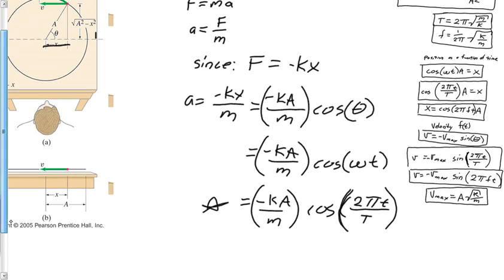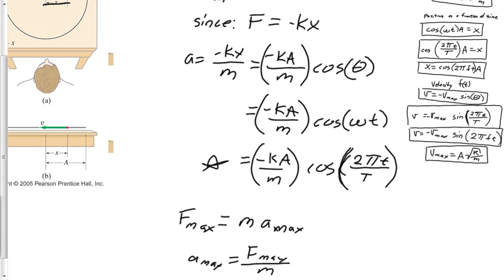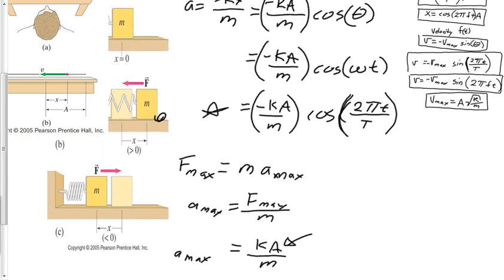Let me do a brief sidebar: the maximum force equals mass times maximum acceleration, occurring at greatest displacement. So acceleration_max equals F_max/m, which equals kA/m. This is essentially Hooke's law — force equals spring constant times displacement — and maximum acceleration occurs when displacement is greatest, at amplitude A.